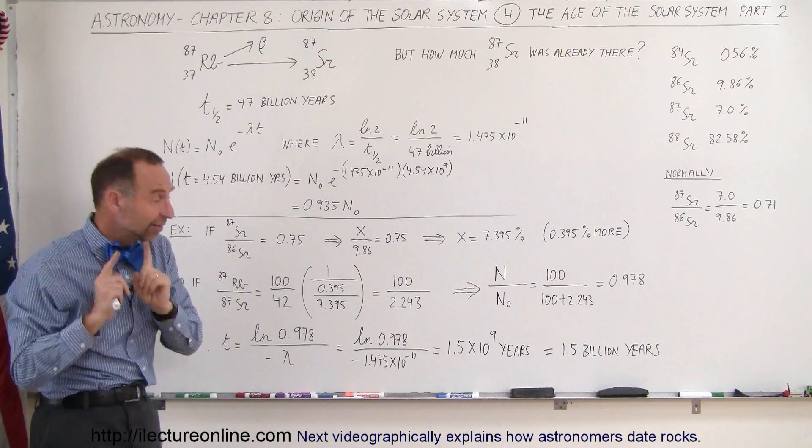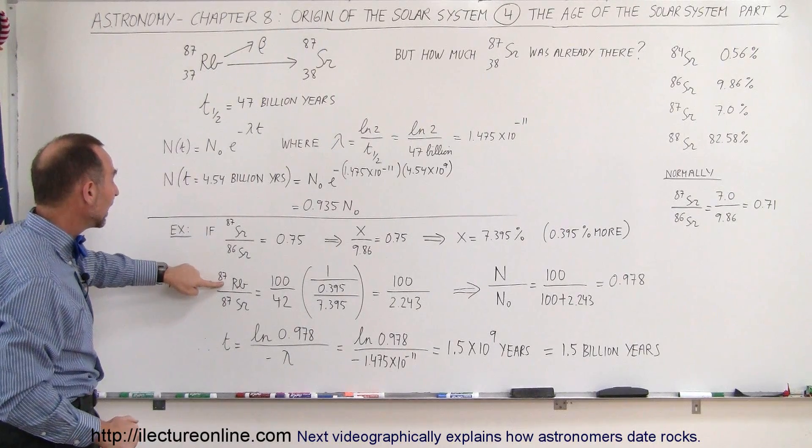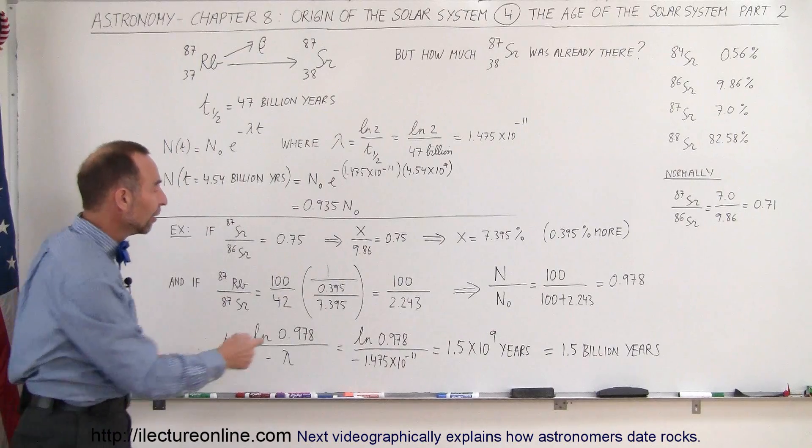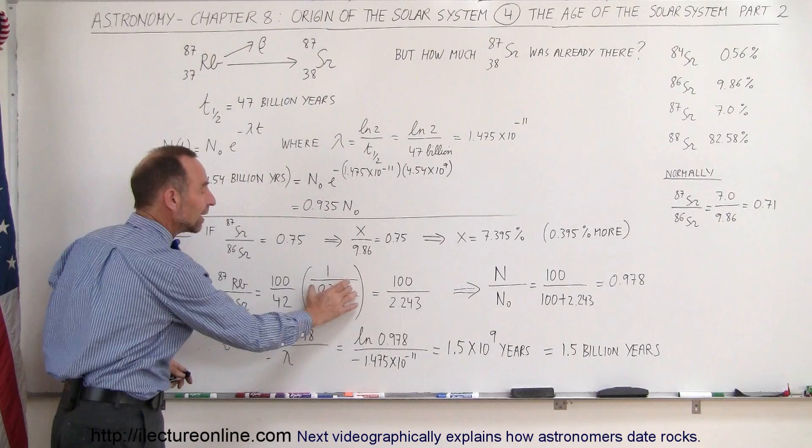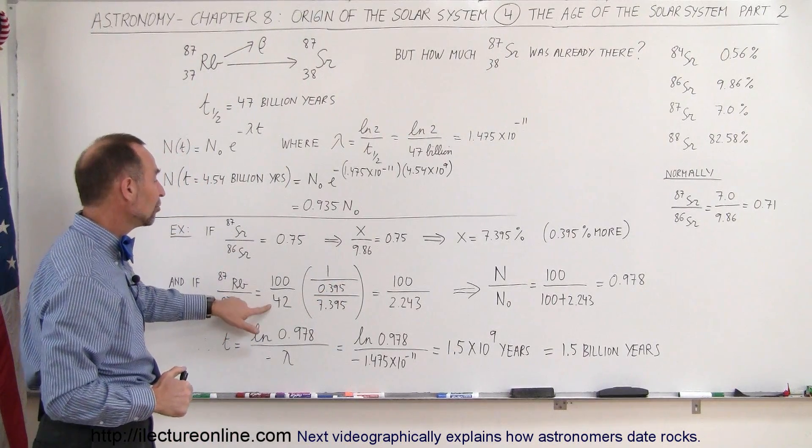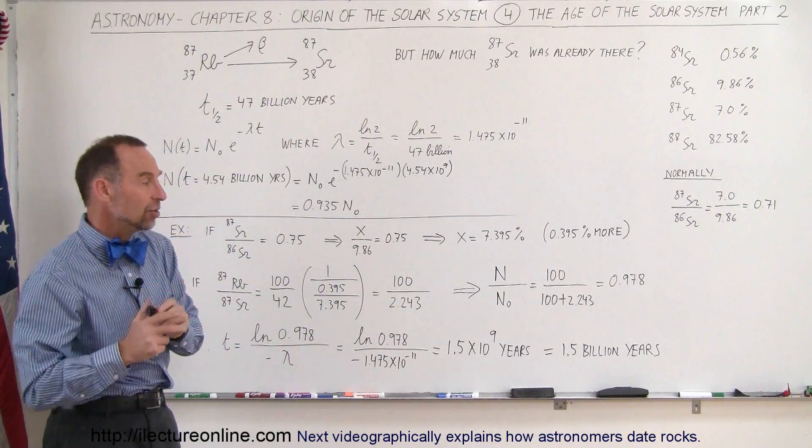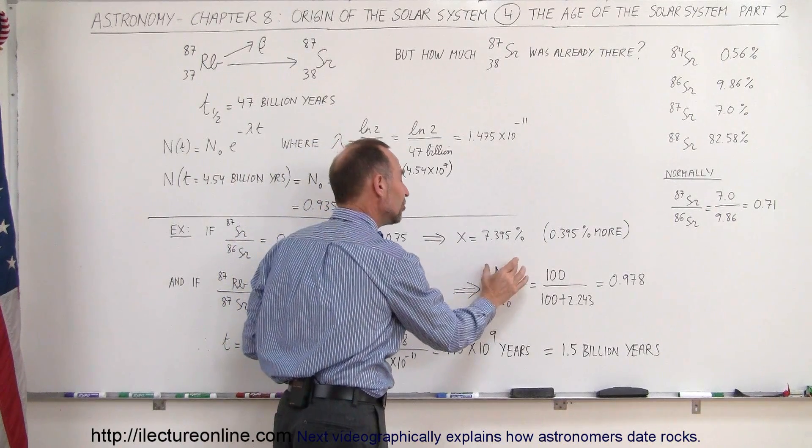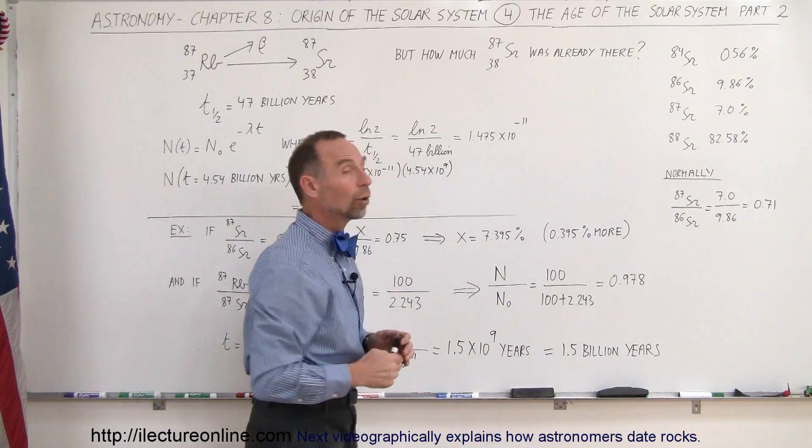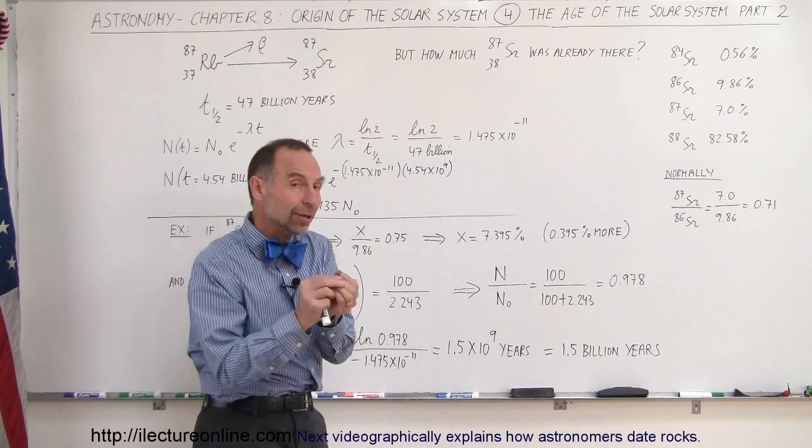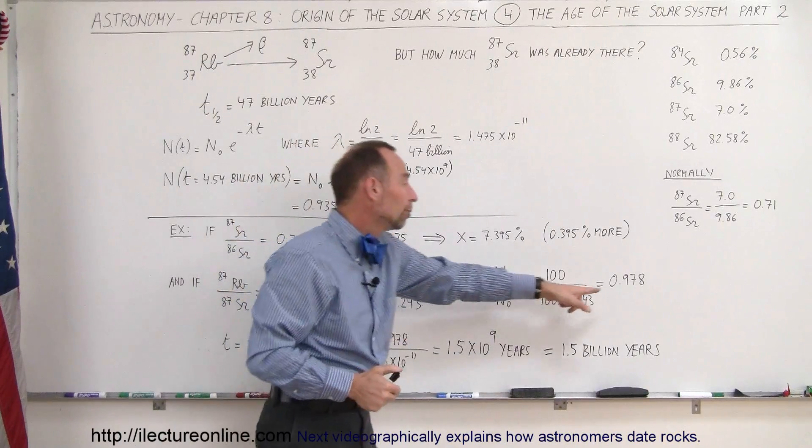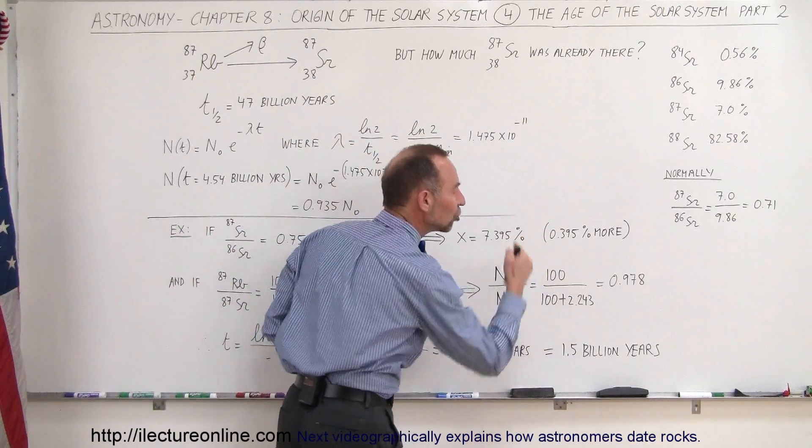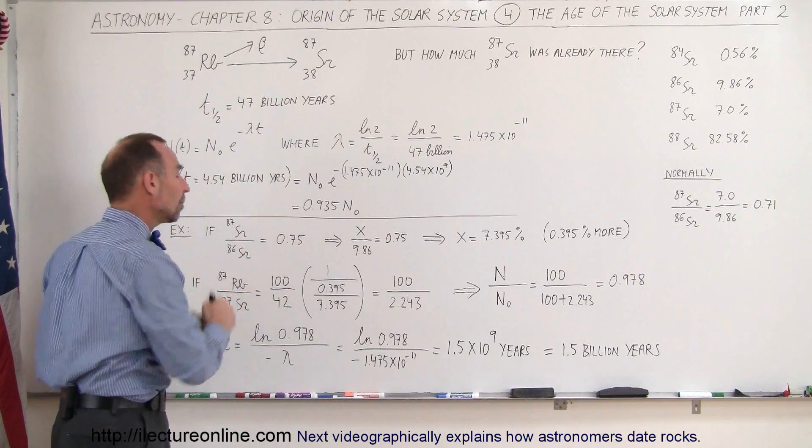So how old is that rock? Well, the second measurement we have to do is do the ratio between Rubidium-87 and Strontium-87. So it's normally 100 to 42, but now we have to compensate for the change in the presence of Strontium-87, the 0.395% compared to normal 7.395%, which means it gives us 100 to a 2.243 ratio change, which means that the amount of Strontium that was there before that there is now compared to Strontium that there is before is going to be in this ratio. Or vice versa, we can also say that the amount of the Rubidium that's left compared to the amount of Rubidium that should have been there in the first place would be 97.8%. And we do that by using this number, add it to 100 in the denominator, so it's 100 to that, and that would be the change in the Rubidium based upon the relative ratios of the Strontium and the Rubidium to Strontium.